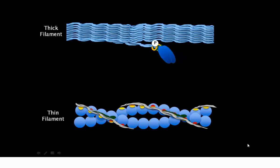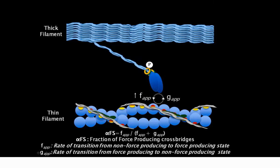This causes the average position of the myosin head to move away from the thick filament and closer to the thin filament. During a subsequent contraction, this closer interaction increases the rate at which cross-bridges transition from the non-force producing to force producing states, illustrated here as an increase in F apparent. It does this without affecting the rate of the reverse transition from the force producing to the non-force producing states, which is illustrated here as G apparent.